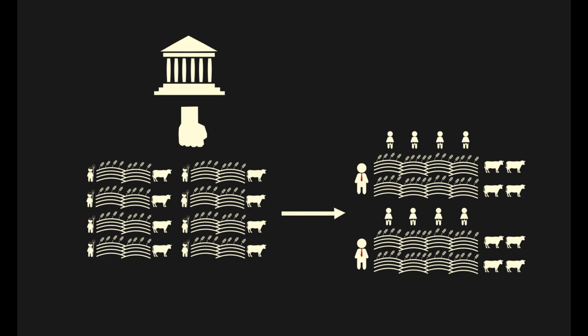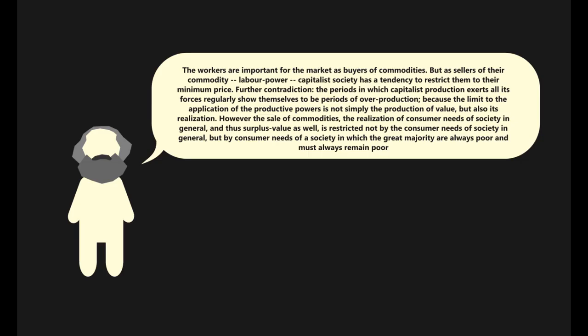Marx outlined another contradiction in the capitalist mode of production: Workers are important for the market as buyers of commodities. But as sellers of their commodity—labor power—capitalist society has a tendency to restrict them to their minimum price.